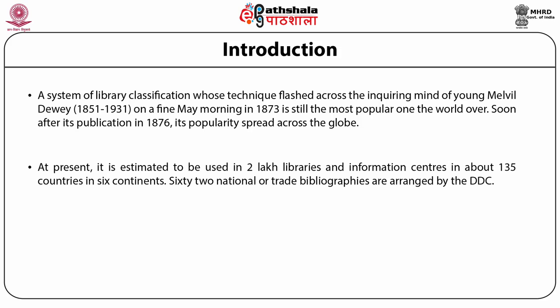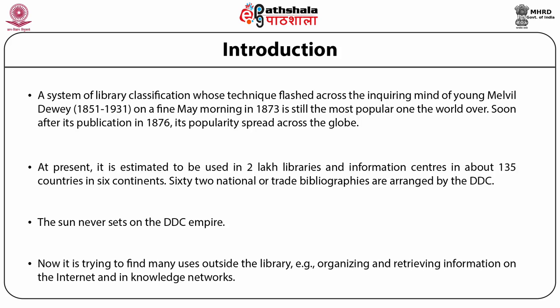At present it is estimated to be used in two lakh libraries and information centers in about 135 countries in six continents. 62 national or trade bibliographies are arranged by the DDC. The DDC is not only used in libraries to arrange books but also many other media, and for bibliographies and national bibliographies it is getting much more popular. Its popularity is so widespread that it is said the sun never sets on the DDC empire. Now it is trying to find many users outside the library, for example organizing and retrieving information on the internet, in knowledge networks and in databases.